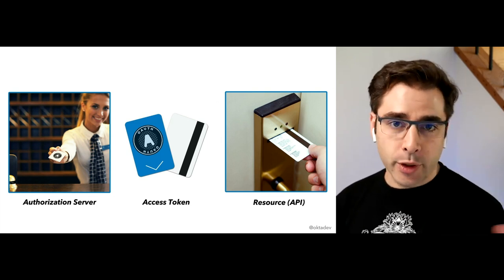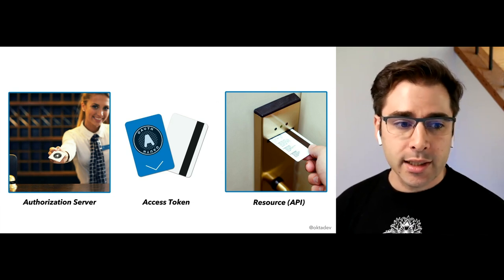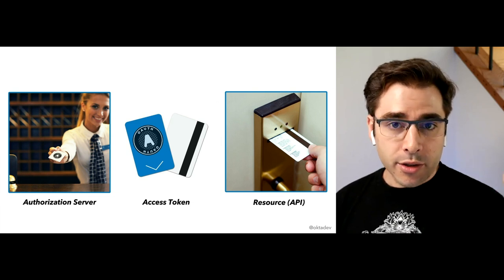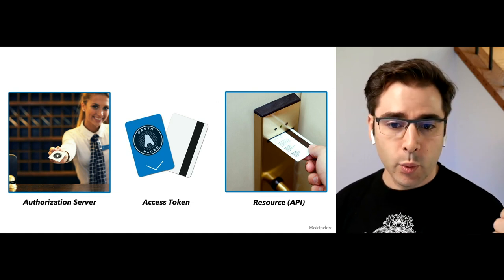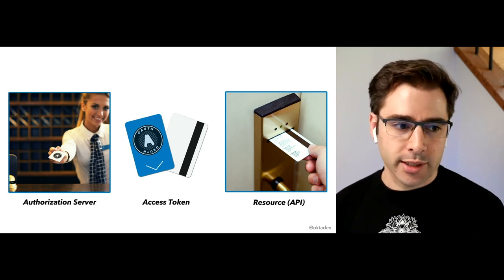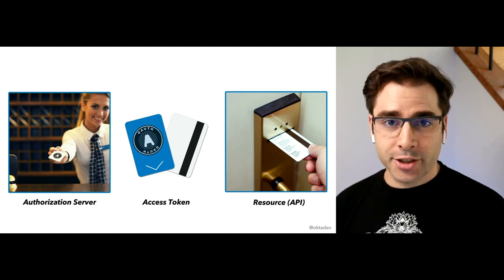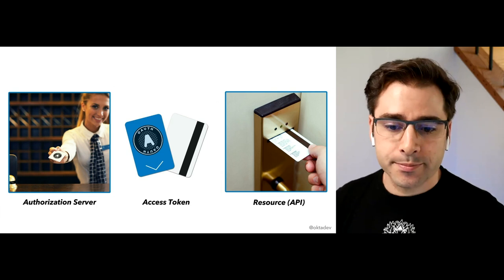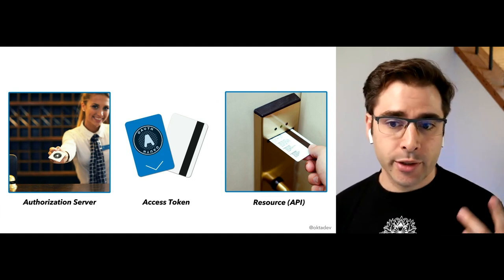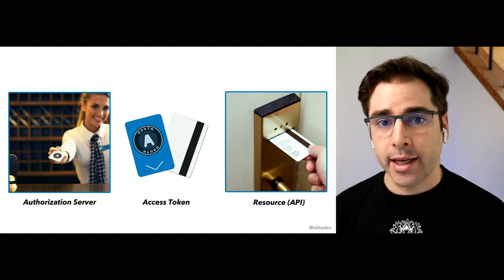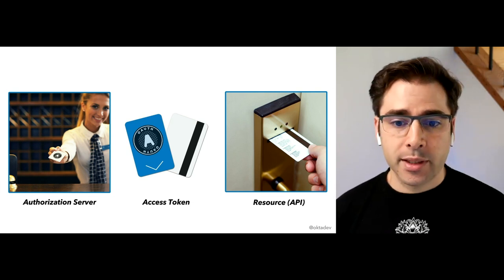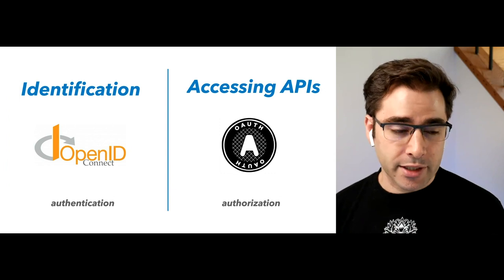This has a couple of really important properties that are also the same in OAuth. When you use a hotel key, you don't actually care what's on that key in order to use it — you just care that the door knows what's on it. You don't need to be able to read it; you just need to approach the door and use it. That's exactly the same with OAuth: access tokens do not get interpreted or read by the application that's using them. They get read by the API.